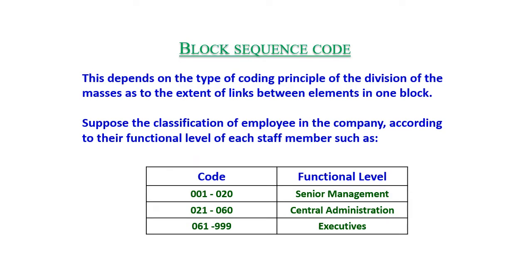Block sequence code depends on the coding principle of dividing data into blocks to extend the link between elements in one block. For example, classifying employees by functional level: codes 1–20 for senior management, 21–60 for central administration, and 61–999 for executive staff.